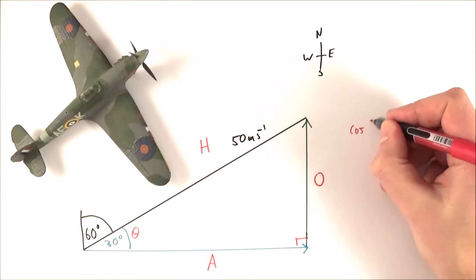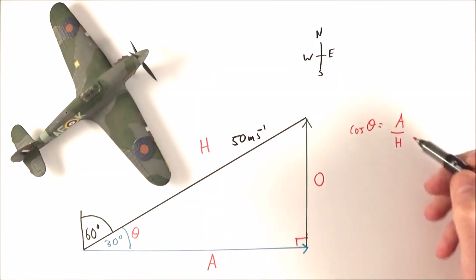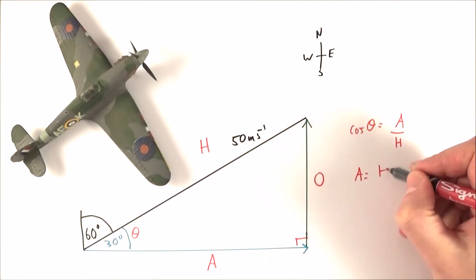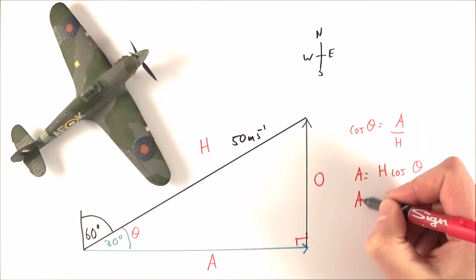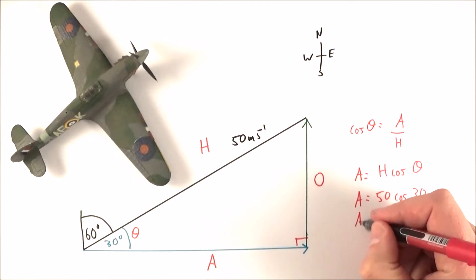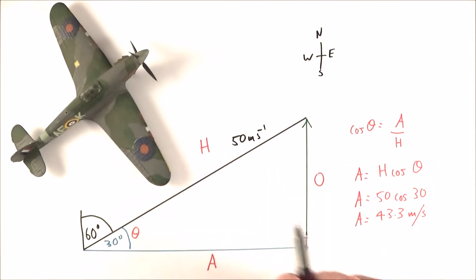Now I can do that using cos. So we can say that cos theta is equal to the adjacent side over the hypotenuse. But we want to know the adjacent side, so I can say that the adjacent side is equal to h cos theta. Now the length of that is going to be equal to 50 times cos 30. And if I put the numbers into a calculator, what I find is that the adjacent side is equal to 43.3, and the units for that are going to be metres per second because they're the units for this vector here.